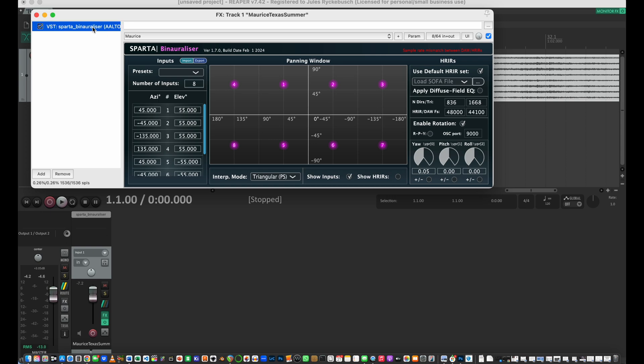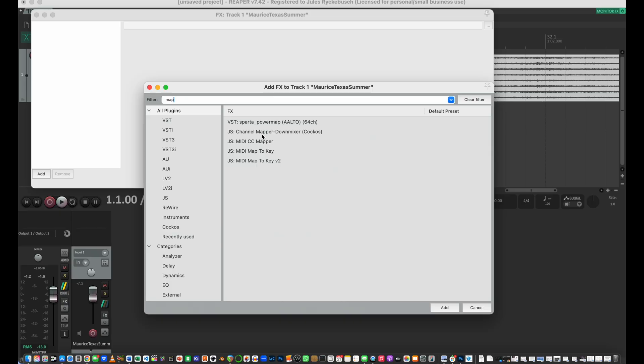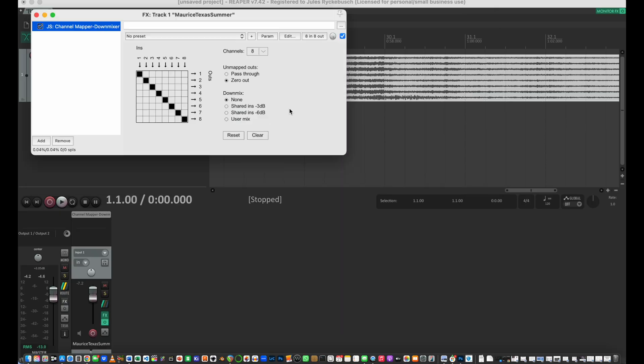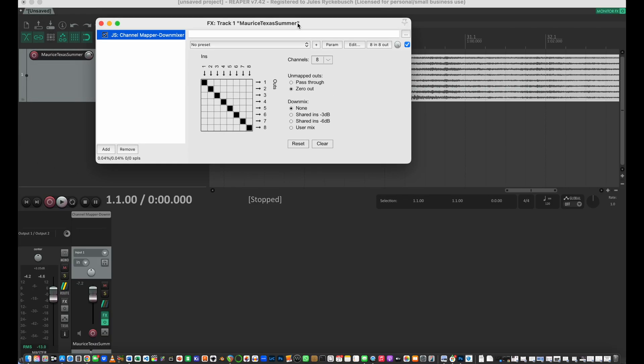So we won't need the binauralizer plugin for that. We're going to delete that one and then we're going to add in a channel mapper plugin. So instead of BIN, let's go to map for mapper. And this plugin is included with Reaper and it's really fantastic. Super easy to use, intuitive, and it was one of those ones I didn't realize they had until I started diving in there.